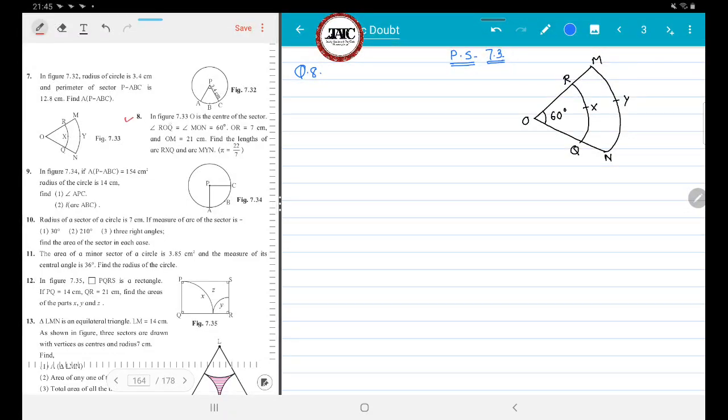In question number 8, a figure is given 7.33, in which measurement is given as angle ROQ, which is 60 degrees. Similarly, angle MOQ is also 60 degrees. And it is given OR is 7.